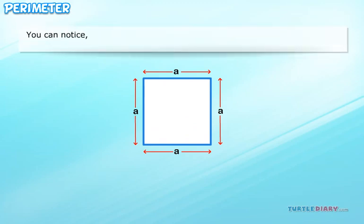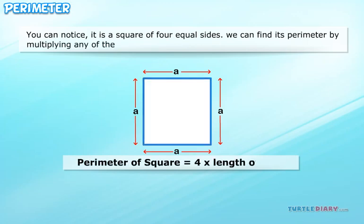You can notice it is a square of 4 equal sides. We can find its perimeter by multiplying any of the sides by 4.